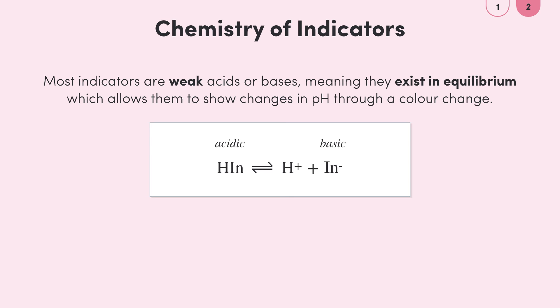But as you can see indicators can show changes in pH through a color change because indicators exist in an equilibrium.